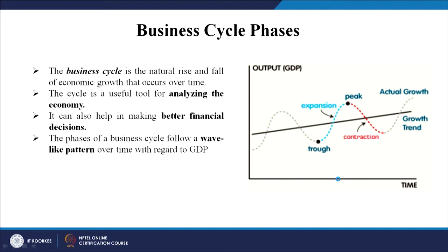Let us first understand contraction and expansion. During any business cycle, there is a natural rise and fall of economic growth. For example, the world market saw a serious depression in the 1930s and another during 2007–08 because of the financial market and real estate market. Because of such periods, there is sudden growth sometimes and sometimes a period of slowdown.